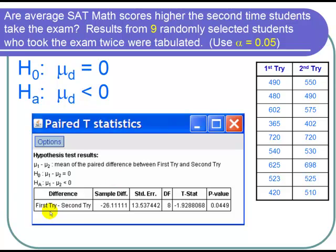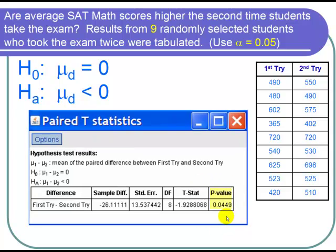We have first try minus second try. Our sample difference, that's the mean of our sample d's, is negative 26.11111. Our degrees of freedom is 8 because we have 9 pairs and 9 minus 1 is 8. Our t statistic is negative 1.9. And our p-value, that's the important number, is 0.0449.